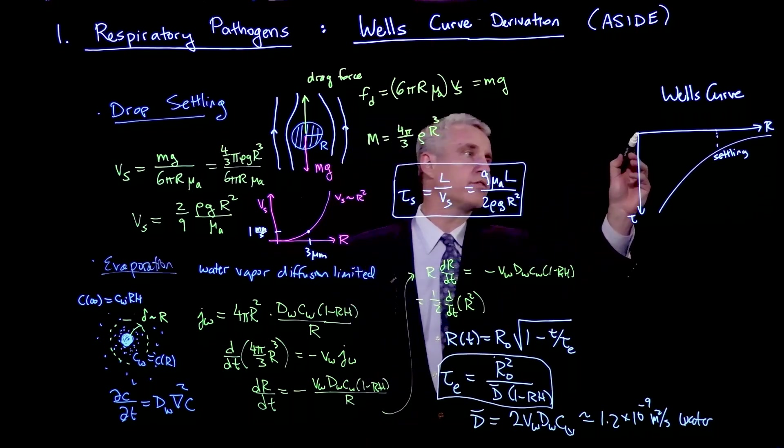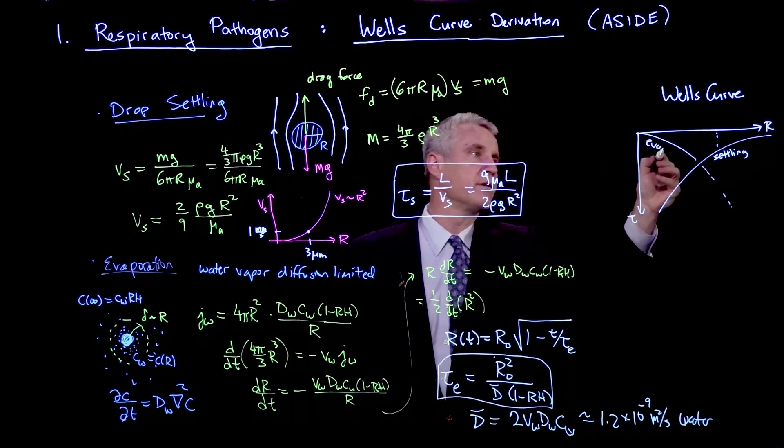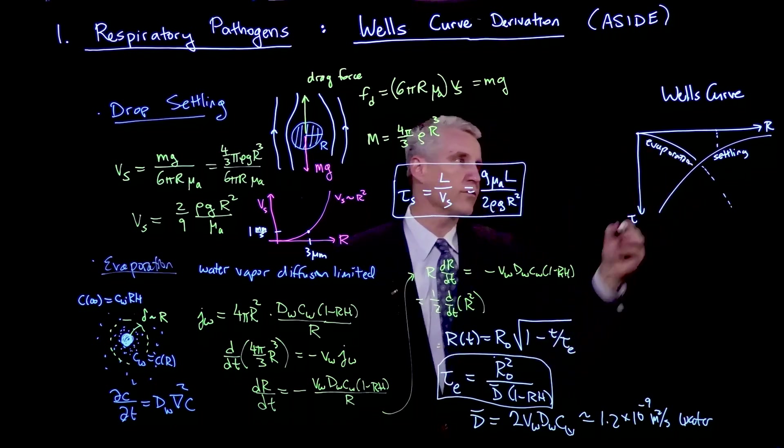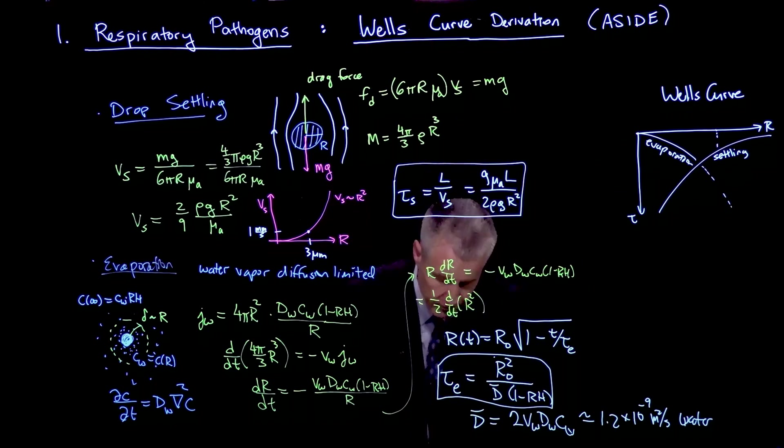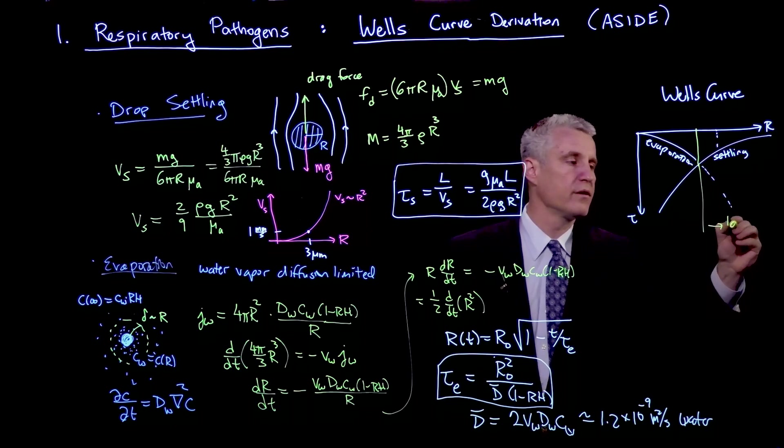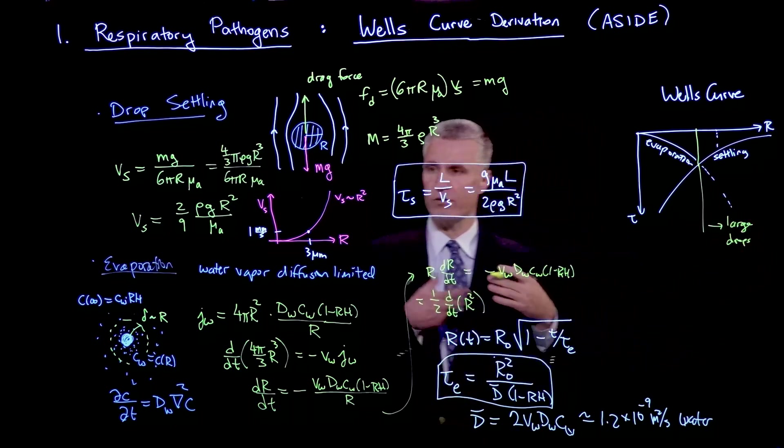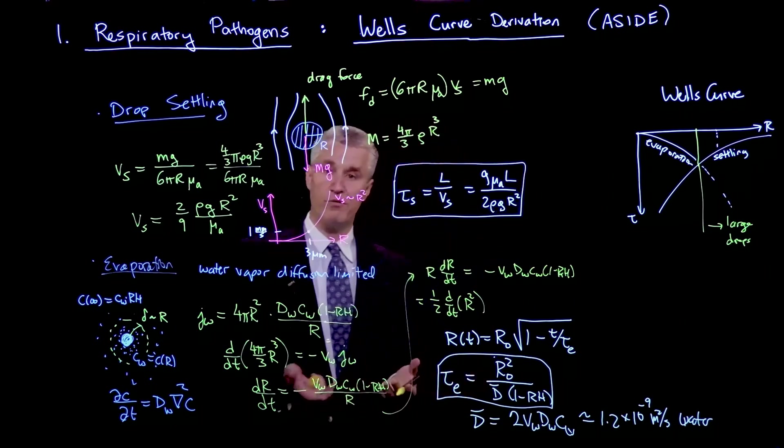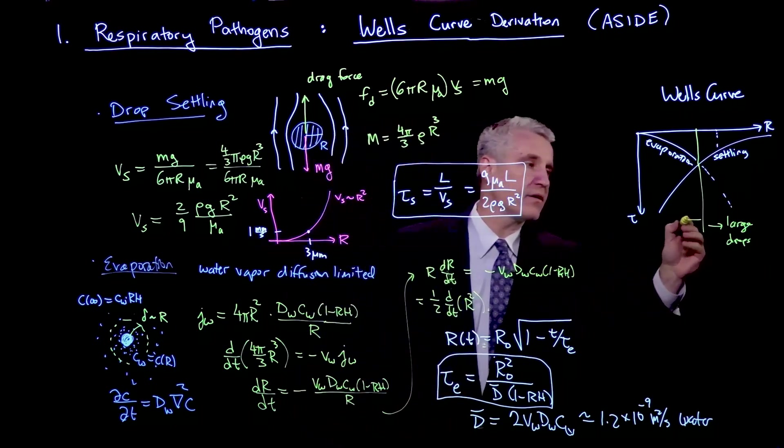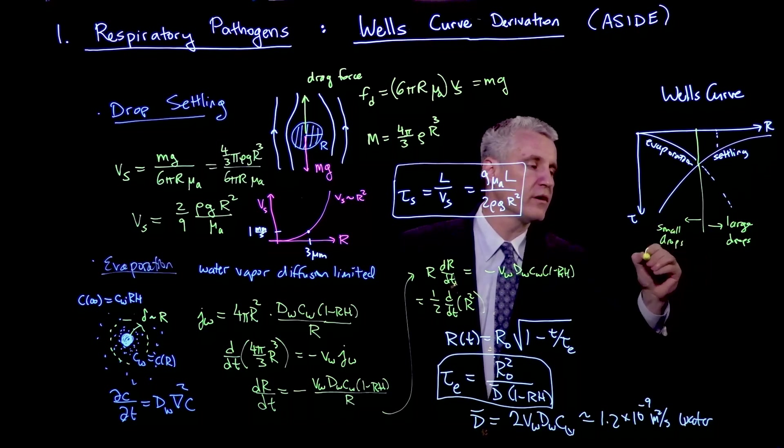That's where you get now the second part of the Wells theory, which is the evaporation, which gives you a curve looking like this. So there's this sort of, in this theory, a natural crossover between large drops, which in this case are ones that are large enough to settle out of the fluid before they evaporate, and small drops, which evaporate.